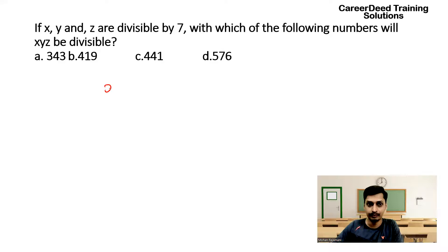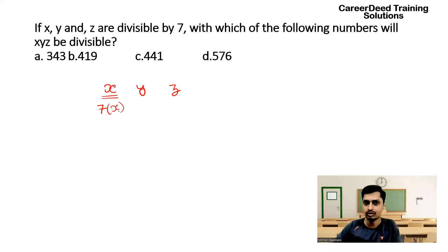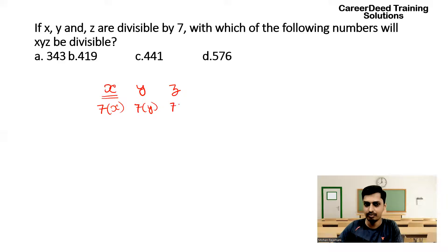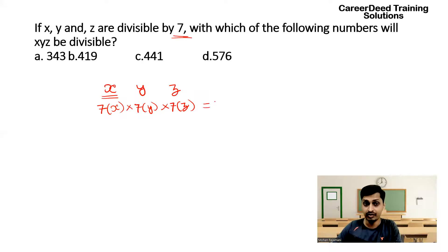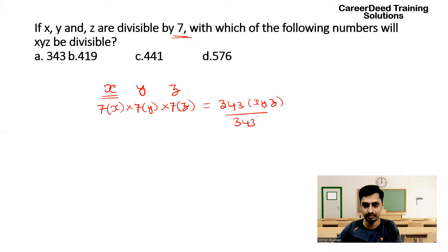We know X is divisible by 7, Y is divisible by 7, and Z is divisible by 7, so each is a multiple of 7. So X = 7×something, Y = 7×something, Z = 7×something. If you multiply all three numbers together, you get 7×7×7 = 343, times X×Y×Z. Definitely 343×X×Y×Z will be divisible by 343. So the answer for this question is 343.